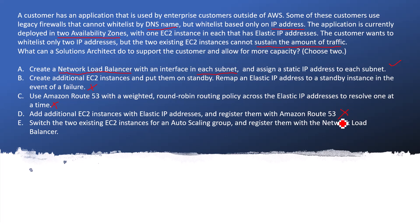Option E: Switch the two existing EC2 instances for an auto scaling group and register them with the network load balancer. This is the perfect answer. We are taking the existing two EC2 instances and putting them into an auto scaling group. When there is a high load, AWS will automatically scale and provision new EC2 instances, so you can sustain the amount of traffic.